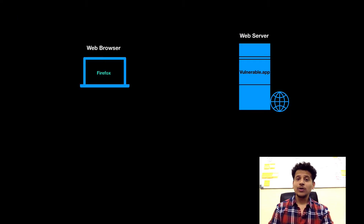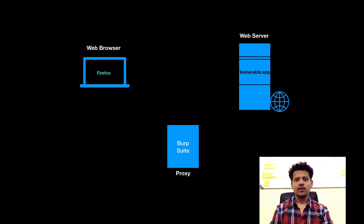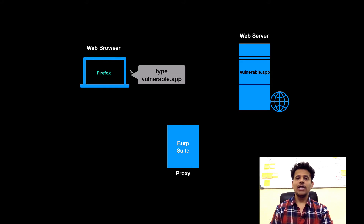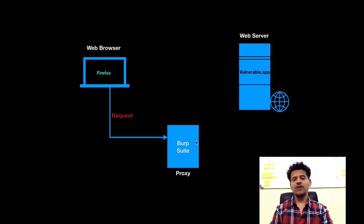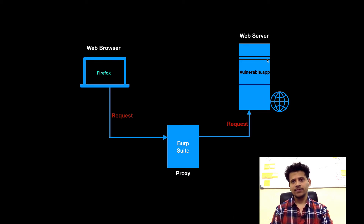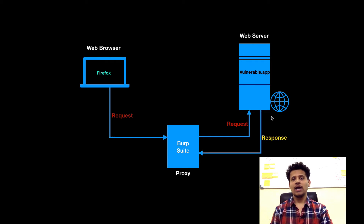Let's look at our connection once again. This is our Firefox web browser, this is our vulnerable.app web server, and we have configured our Burp proxy to listen to our connection. When we type vulnerable.app into the web browser, the request goes to Burp first. After that, when we click forward, the request will go to the web server.